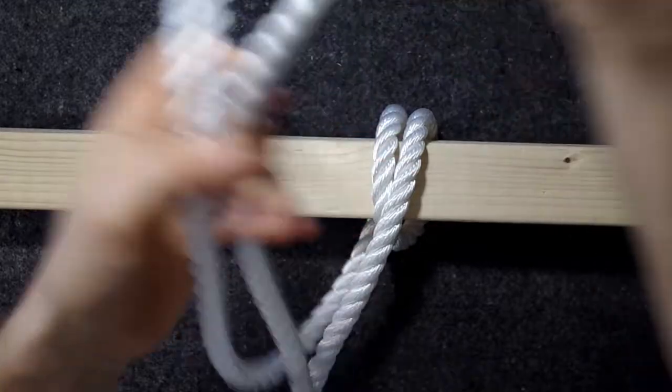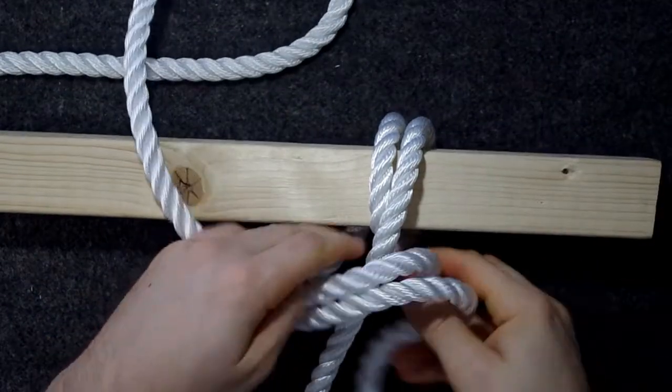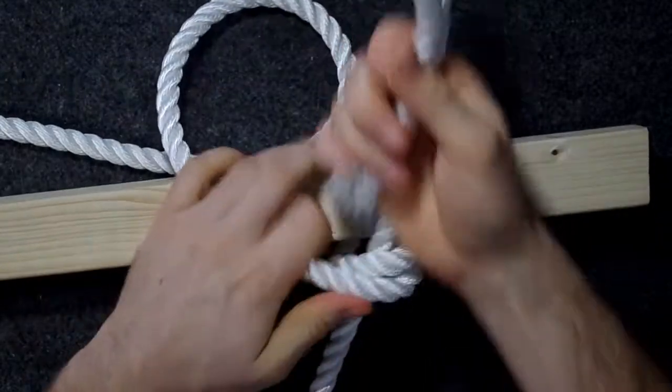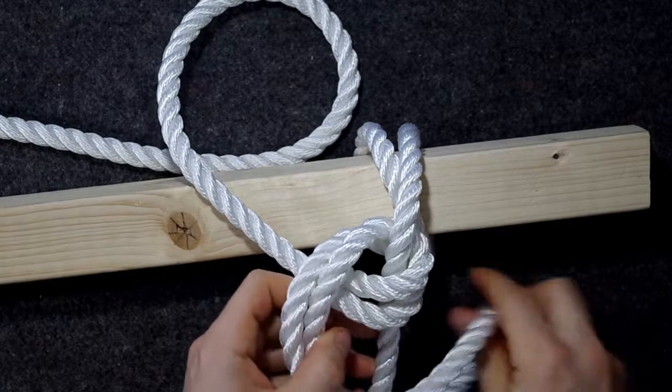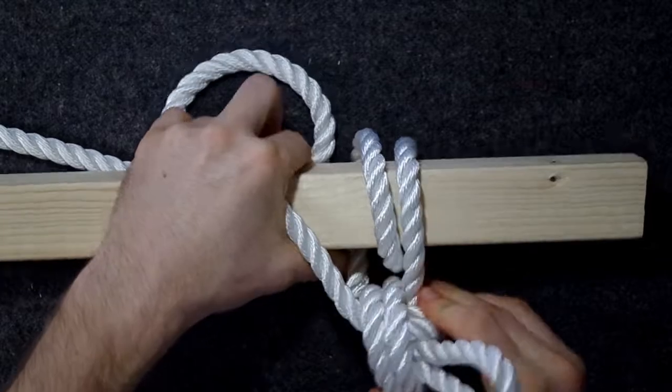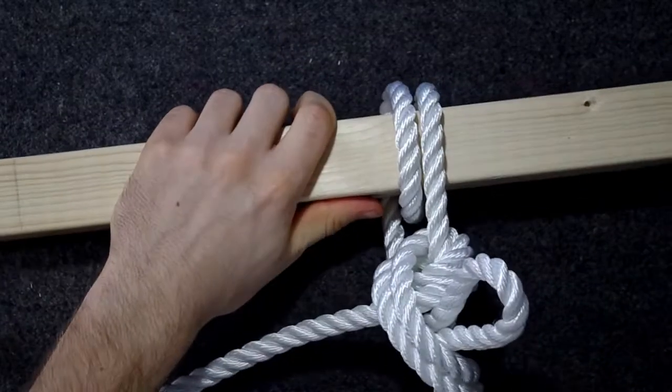If you have really long lines and you don't want to thread this entire thing through, you can just tie the entire thing with a bight. So you can do a half hitch and then another half hitch like that, and this will hold as well.